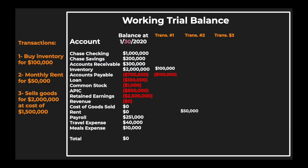Transaction number two is the monthly rent. As we said before, expenses have a debit nature, so you record a debit to that expense and a credit to either cash or accounts payable. In this case we are recording $50,000 as a debit to rent expense and $50,000 to accounts payable, meaning we will pay that in the future, perhaps in the next week.